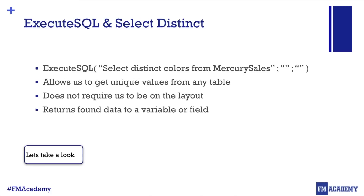Before we go there, I want to talk about ExecuteSQL. One of the things that's very useful about SQL is its ability to group data and find unique values. For example, SELECT DISTINCT colors FROM mercury_sales — the DISTINCT keyword allows us to say show me only one color, so a color like black might appear a hundred times but I only get one value. That becomes extremely useful when setting up pivot tables. ExecuteSQL does not require you to build structure — you just have to have the table on your file, and it returns your data to a variable or field.